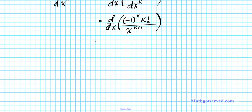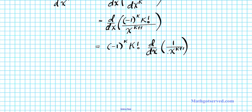Let's go ahead and find the derivative of this expression. Using the constant multiple rule, we can factor out the constants. We know that k is an integer — it's a constant. So negative 1 to the k and k factorial are both constants. What we are basically looking for is d/dx of 1 over x to the k plus 1. Let's rewrite this as a power so we can apply the power rule — that is, as negative 1 to the k times k factorial times the derivative of x to the negative k minus 1.